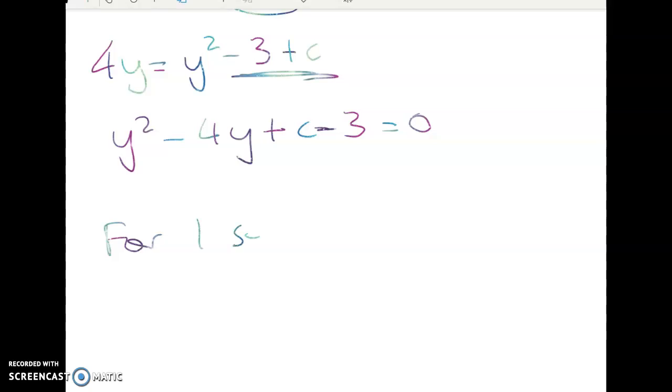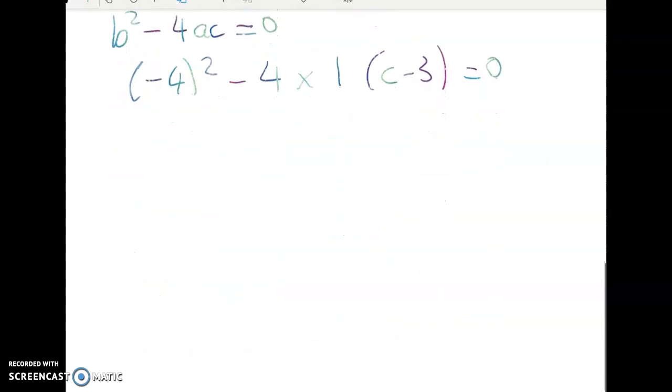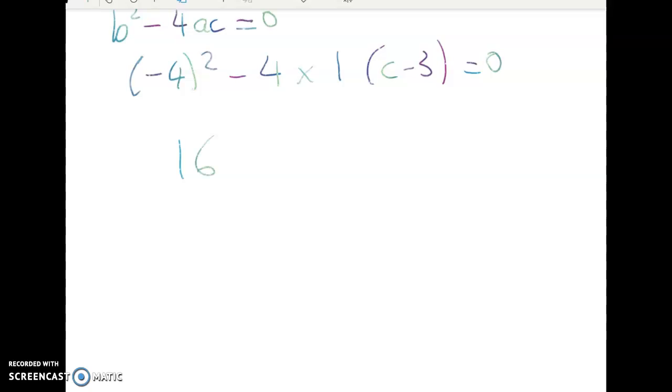So for one solution we want to have b squared minus 4ac equals 0. So what's b squared minus 4ac? Well I've got negative 4 squared minus 4 times 1 times c minus 3 is equal to 0. That gives me 16 minus 4c plus 12 is equal to 0. 28 equals 4c. C is equal to 7.